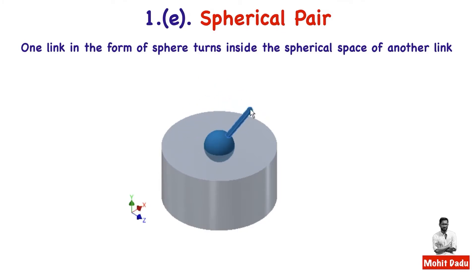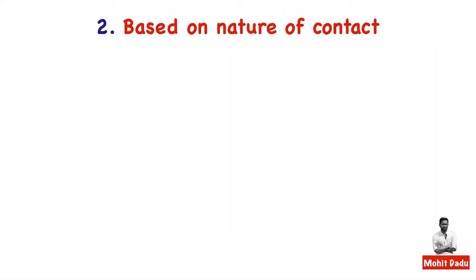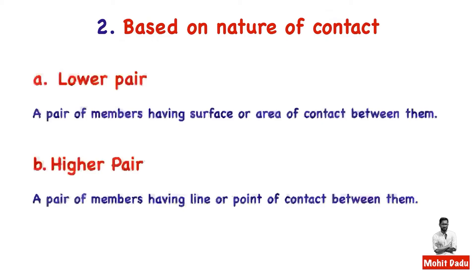A spherical cavity is formed by one link, and a second link with a spherical end is encaged within it, making movements inside — these two links form a spherical pair. So the five classifications based on nature of motion are: turning pair, sliding pair, rolling pair, screw pair, and spherical pair.